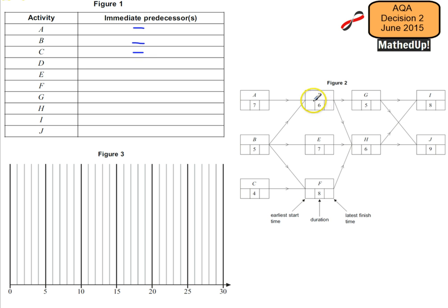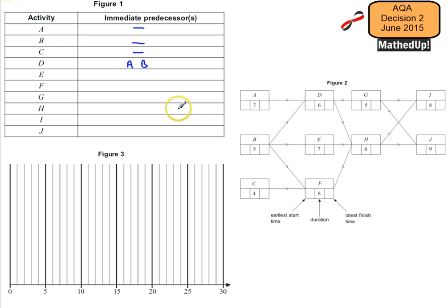In order for activity D to start, A and B would need to be completed first. In order for activity E to start, B needs to be completed before that can happen. And for F to start, B and C need to be completed first.